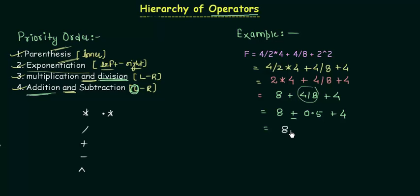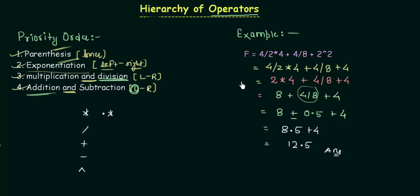8.5 plus 4 is the last step — only one operator left. So 8.5 plus 4 gives you 12.5, and this is your answer. I hope this example cleared up the hierarchy of operators and how to deal with it. It is a very simple topic but very important, as it helps you write your code in MATLAB. In the next presentation we are going to start programming in MATLAB.